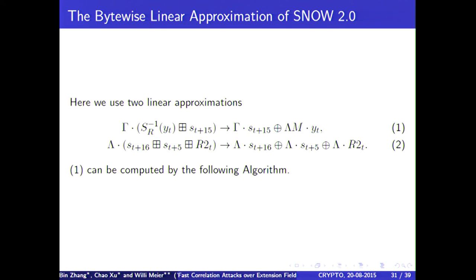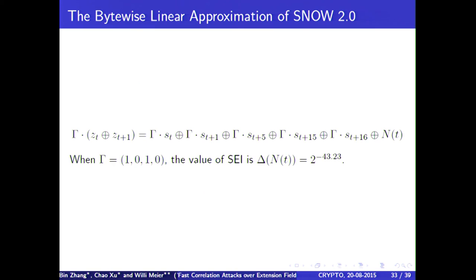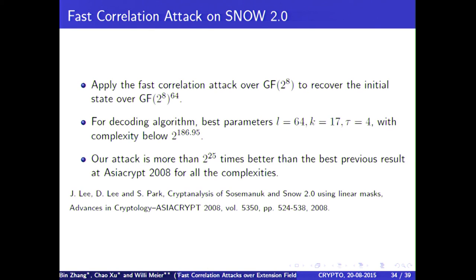It's possible to derive an algorithm to compute the distribution of the linearization approximation. I won't go into detail here. But finally, we end up with what we would like to have. We have now a masked expression, the XOR sum of consecutive output words. And here we have a linear approximation, a linear expression in LFSR words plus the noise. And the nice thing is we are able to compute the squared imbalance of the noise. It's 2^(-43.23).